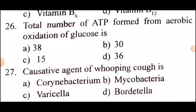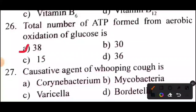Question 20 of 60: What is the total number of ATP formed from aerobic oxidation of glucose? Answer is Option A: 38.